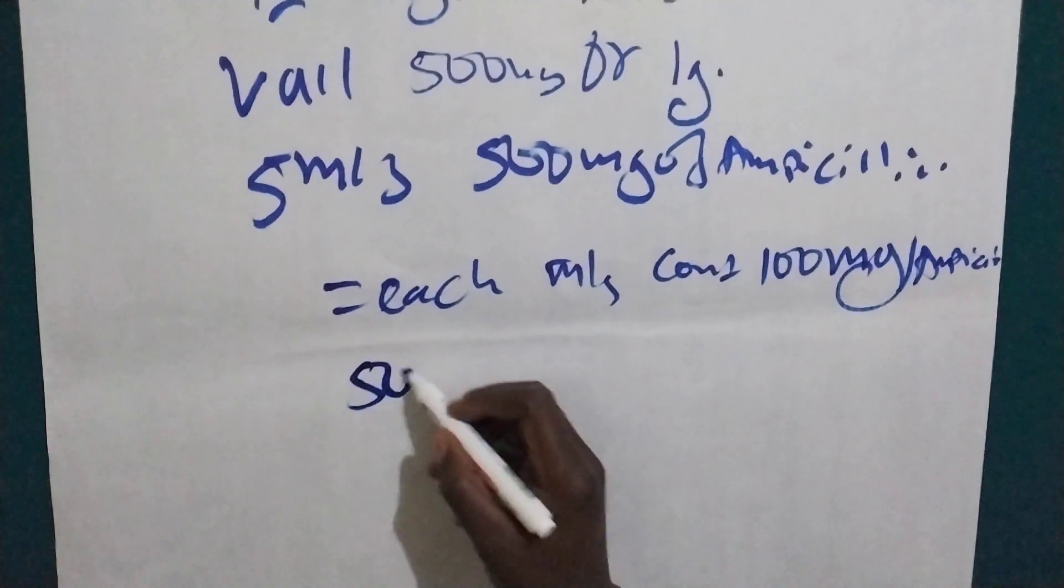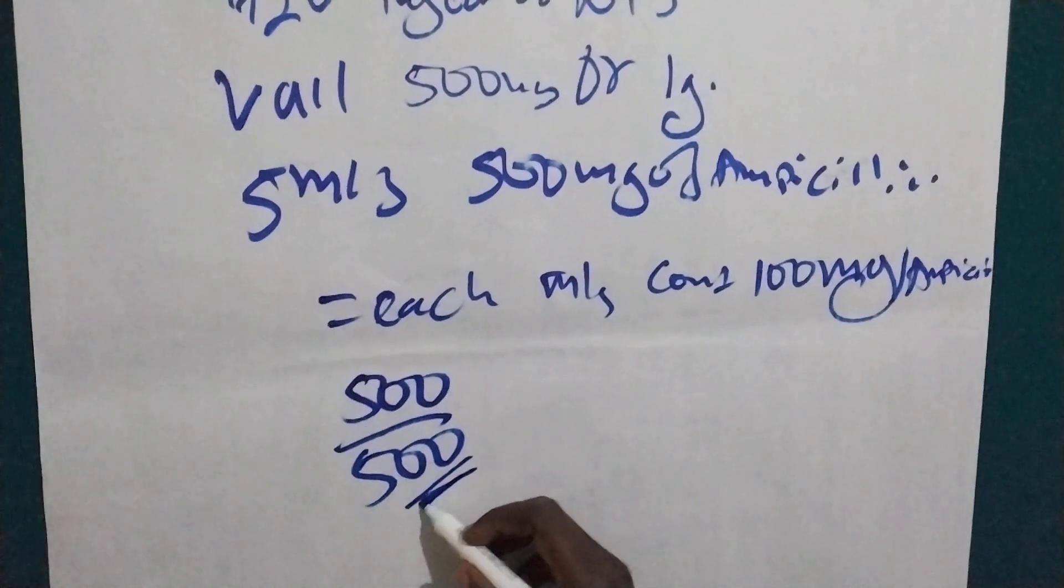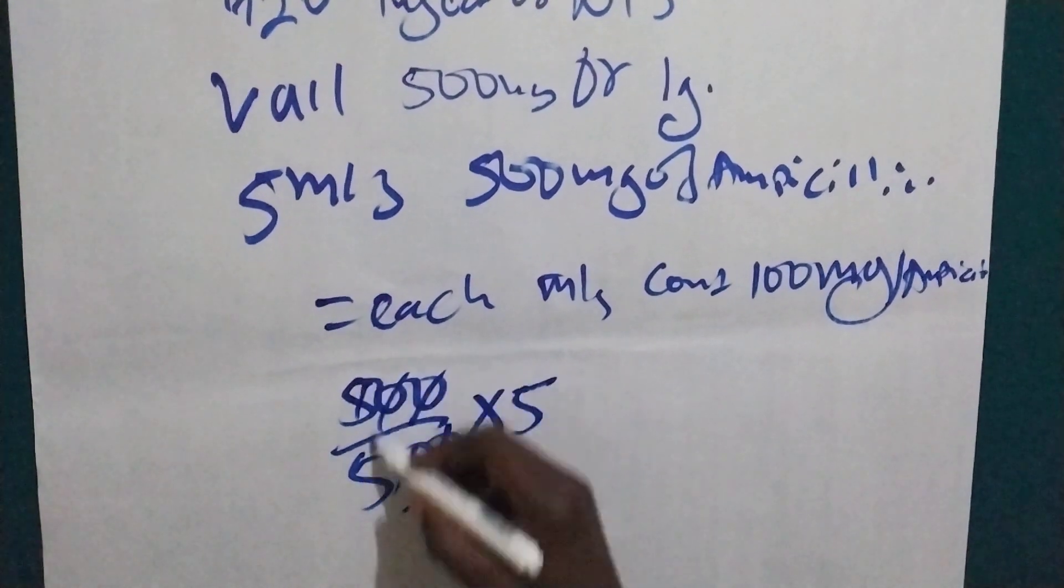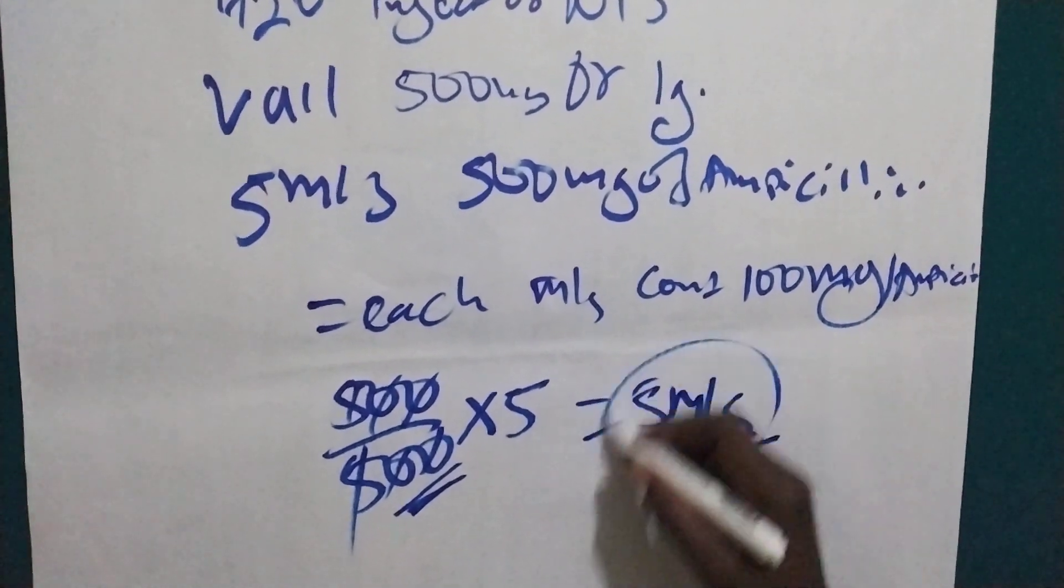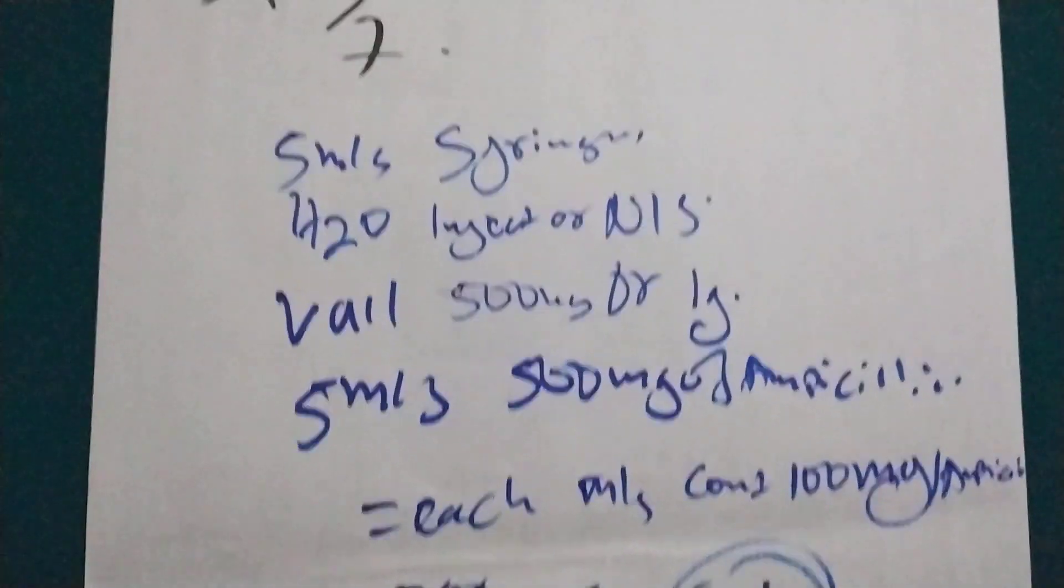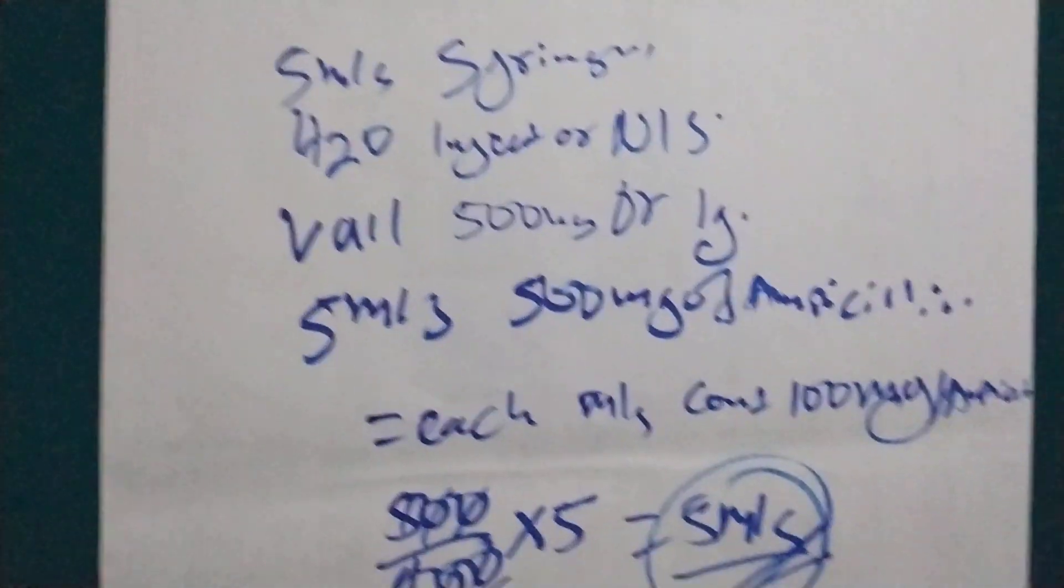So let's use the formula: 500 divided by 500 because we use the vial 500 times five. So all this one will cancel. So you are going to aspirate five mils and you give to the person. Thank you for watching. That is all and see you in the next one. Thank you.